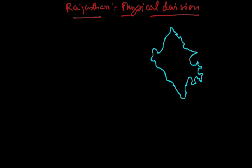We take the arid region of Rajasthan. The arid region is in the center of Rajasthan, from its north west to its south east part, as you can see here — this yellow part.